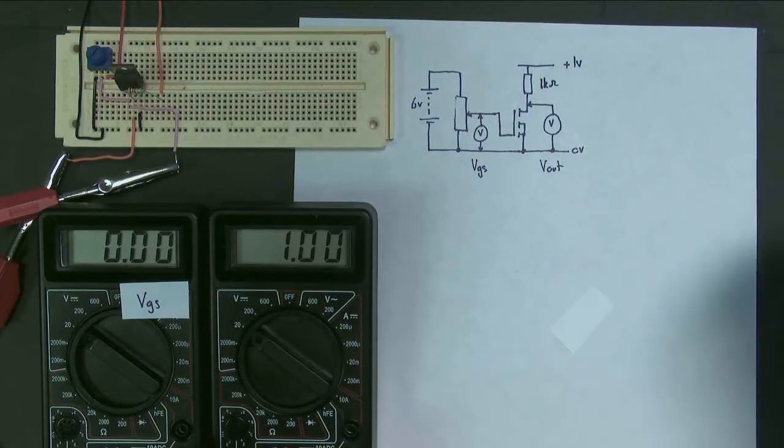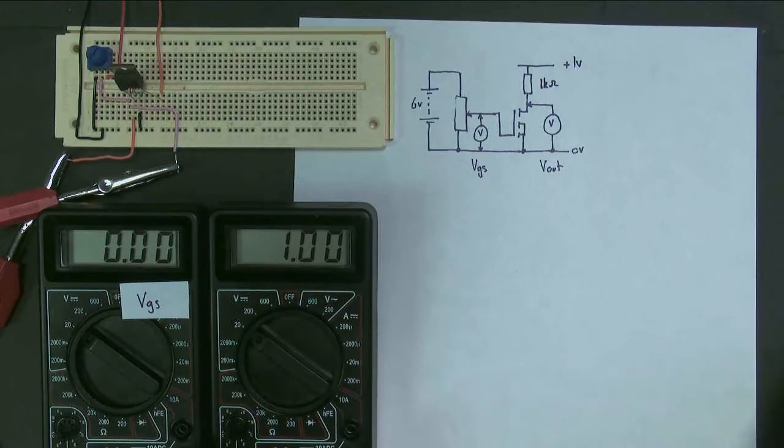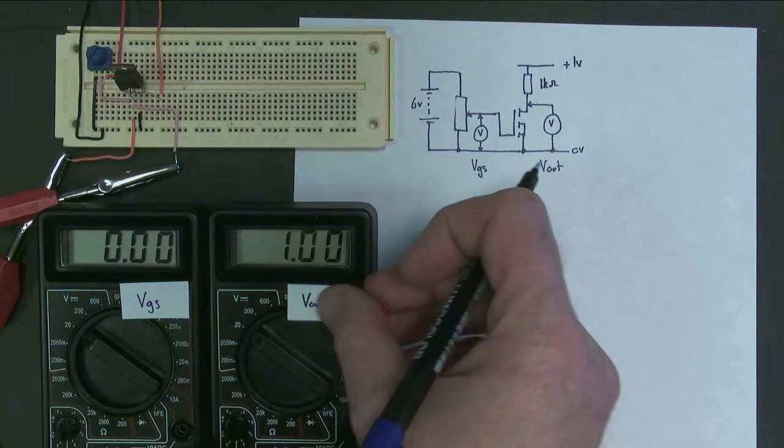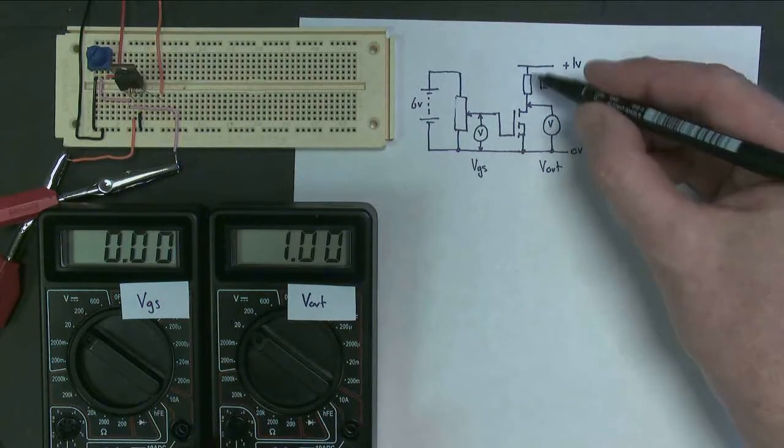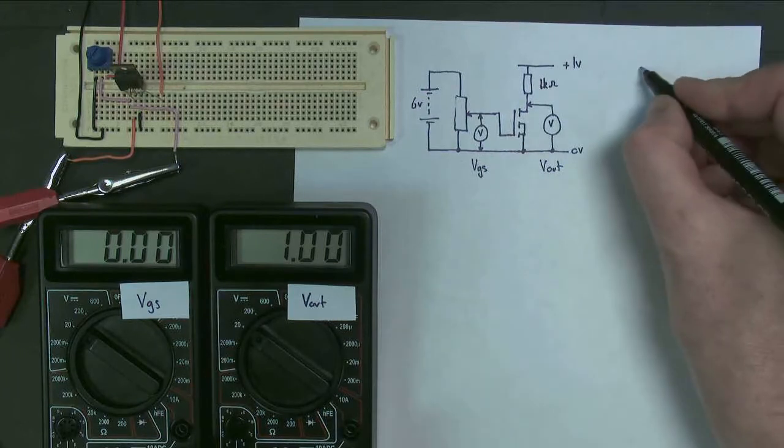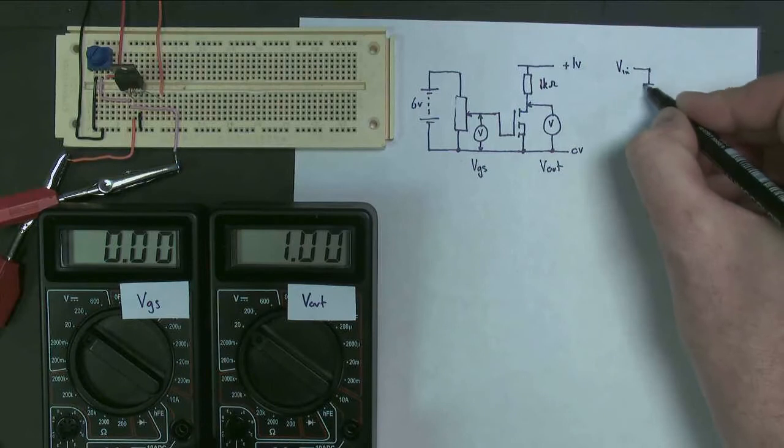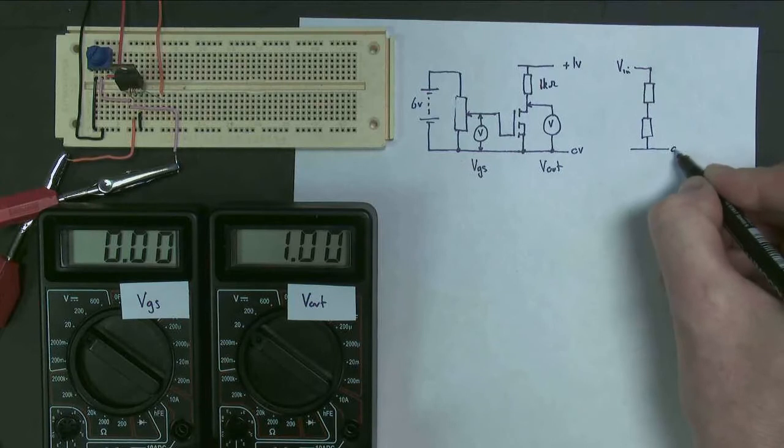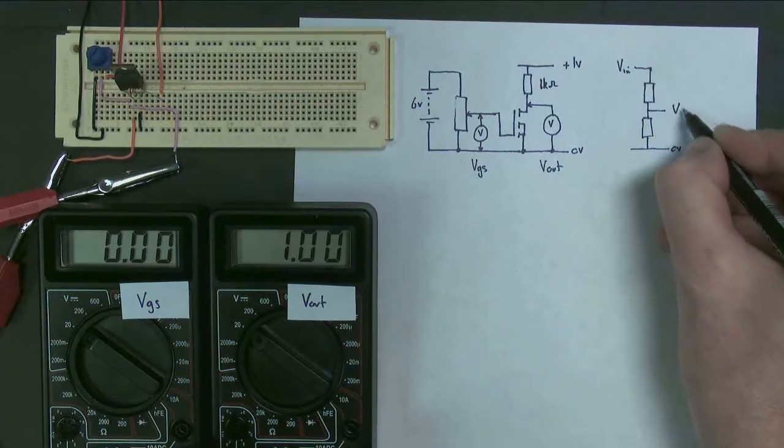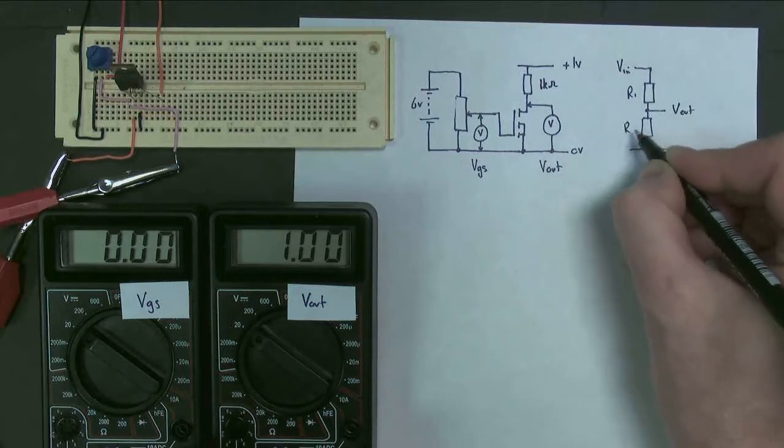Now why is it going to be labeled Vout? Well, the reason it's labeled Vout, like that, is because this circuit here we should recognize as being a potential divider. The potential divider, of course, is two resistors. And we get a voltage out R1 and R2.